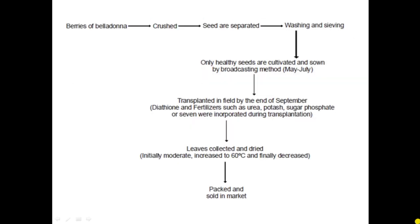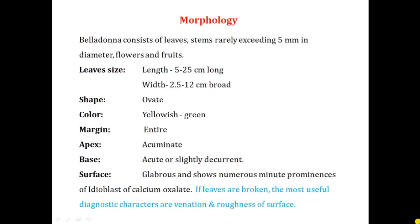Cultivation flowchart: Take berries of belladonna, crush them, and separate the seeds. Wash and sieve to select only healthy and uniform seeds. Healthy seeds are cultivated at the end of June-July by broadcasting method, then transplanted in the field with suitable row spacing by end of September. During transplantation, add fertilizers such as urea, potassium, and superphosphate. Maintain drying conditions — initially moderate heat, increase to 60°C, then gradually decrease — to produce well-colored leaves ready for packing.